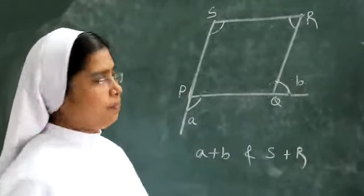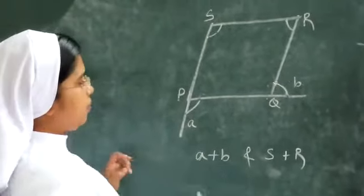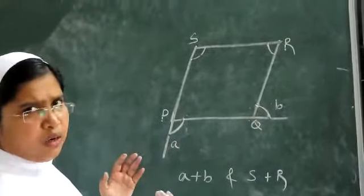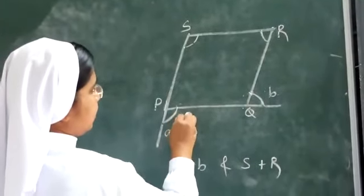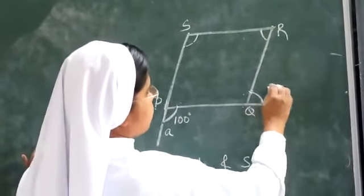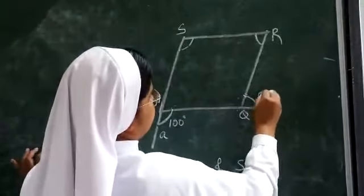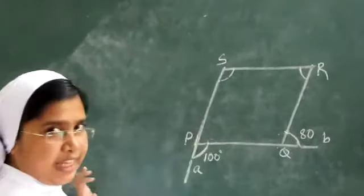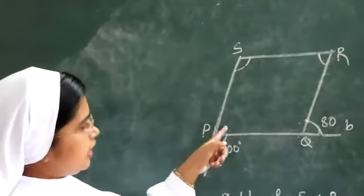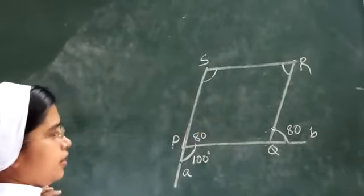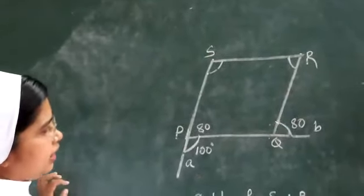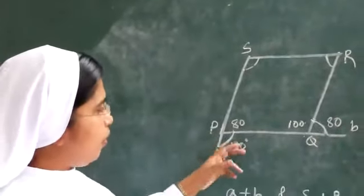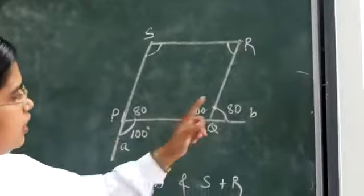I am giving values to the outer angles. One outer angle is 100 degrees and the other outer angle is 80 degrees. If the outer angle is 100, then the inner angle at that vertex is 80, because the sum of a linear pair is 180 degrees. Similarly, if the outer is 80, the inner is 100.